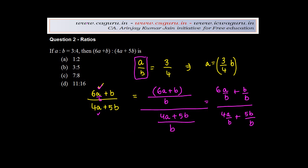Now, this b gets cancelled with this, this gets cancelled with this. And what am I left with? I'm left with 6 times a upon b plus 1 in the numerator, 4 times a upon b plus 1 in the denominator.